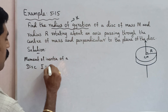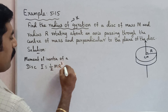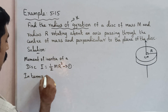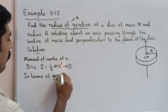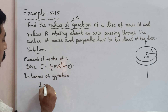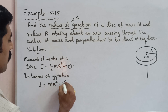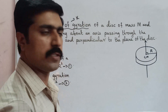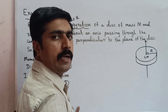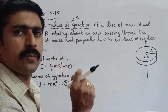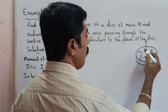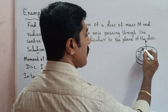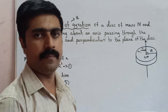The moment of inertia of a disk rotating about an axis passing through the center of mass and perpendicular to the plane of the disk is I = (1/2)MR². This is equation number one. In terms of radius of gyration, the moment of inertia formula is I = MK². This is equation number two, where K is the radius of gyration and R is the radius of the disk.